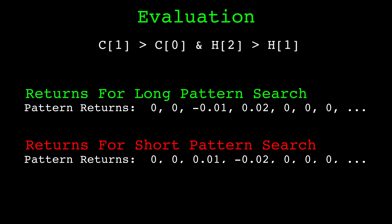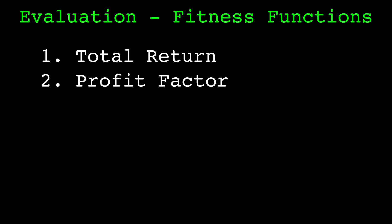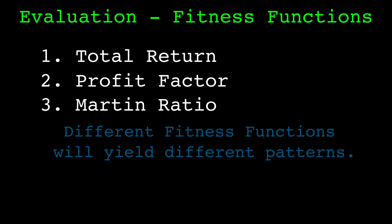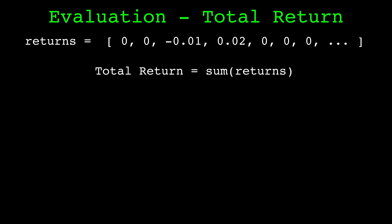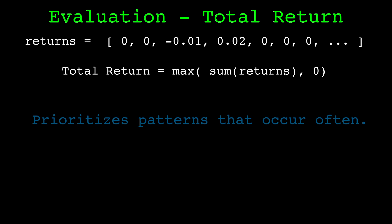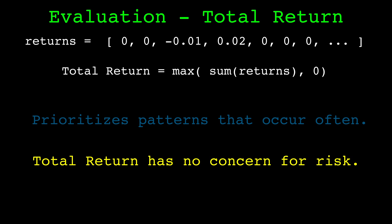Three fitness functions that are reasonable to assess these patterns are total return, profit factor, and the Martin ratio. The fitness function selected will cause different patterns to be found as each prioritizes different behavior. I require fitness functions to only output values greater than or equal to zero — this requirement is important during parent selection. If a pattern is not profitable, its fitness is set to zero. Our first fitness function is the total return, calculated by summing all of the returns. If the sum is negative, we set its fitness to zero. Using total return as a fitness function will prioritize patterns that occur often, leading to a large amount of time exposed to the market. The total return has no concern for risk, so overall I believe this fitness function to be the worst of the three.